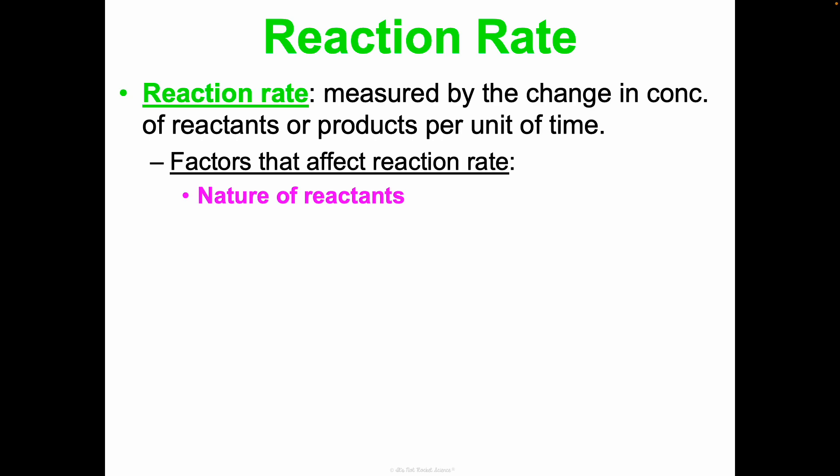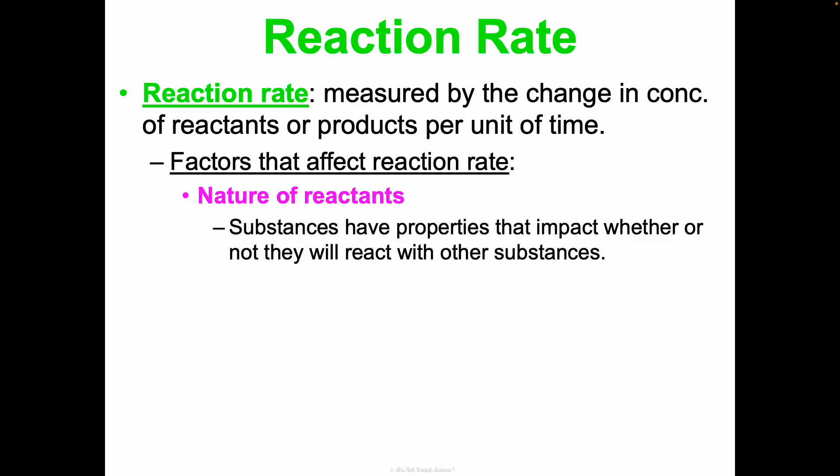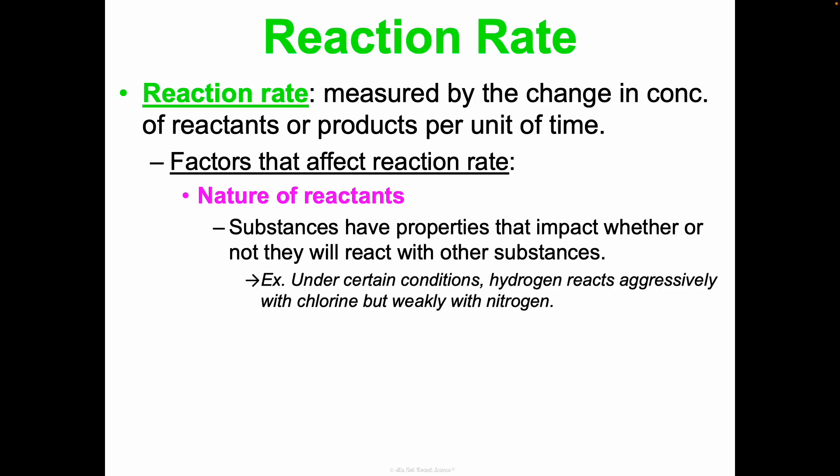First, the nature of reactants will affect the reaction rate. Substances have properties that impact whether or not they will react with other substances. For example, under certain conditions, hydrogen will react really aggressively with chlorine, but weakly with nitrogen. Different atoms of different elements relate to each other differently. So just the nature of reactants in general is going to affect your rate. Keep in mind these are generalizations — there are always exceptions.